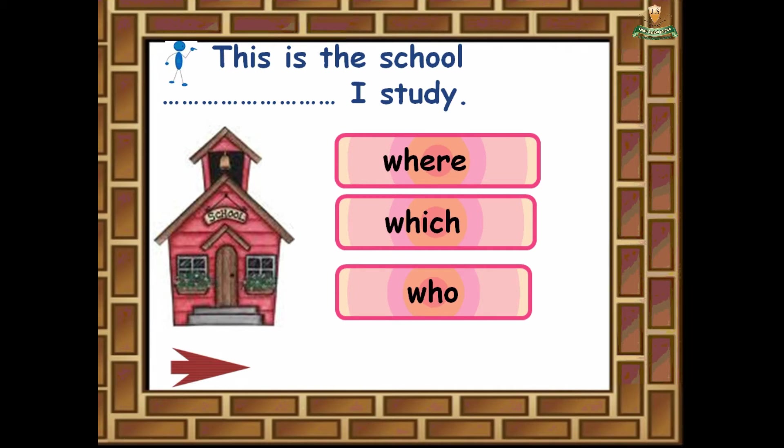Number three: 'This is the school ___ I study.' Where, which, or who? The school is a place where we learn, so the correct answer is where.